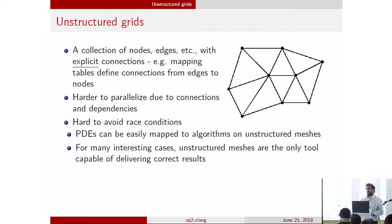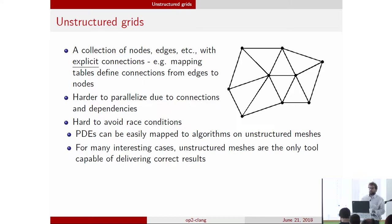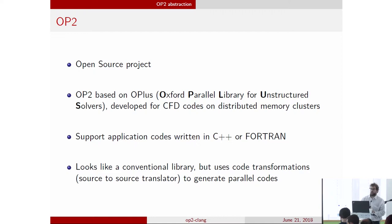For OP2, we're dealing with unstructured mesh applications, which operate on unstructured grids that can be specified as sets like nodes, edges, or cells, with explicit connections between these sets. We have explicit tables containing which node connects with which edge. With these connections, it's much harder to parallelize computations, but partial differential equations are much easier to transform to unstructured mesh applications, and they perform quite well with unstructured meshes.